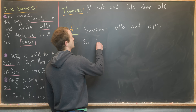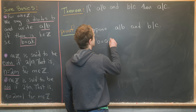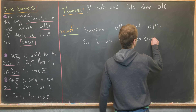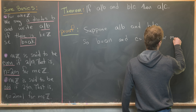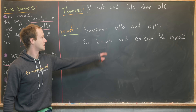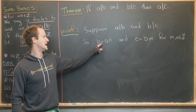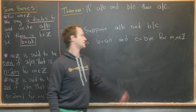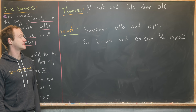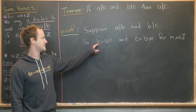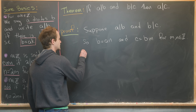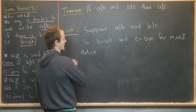That's the definition of a dividing b and b dividing c. Now we can do simple substitution — notice that c equals b times m, but substituting b equals an, that's equal to a times n times m.